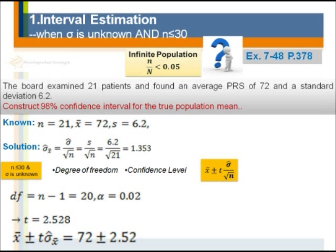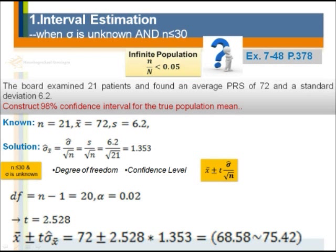Using the same structure as the z-score interval, the interval is the sample mean plus and minus the t-value times the standard error: 72 ± 2.528 × 1.353. This gives two numbers: 68.58 as the lower limit and 75.42 as the upper limit. That means 98% of our population mean will lie between 68.58 and 75.42.